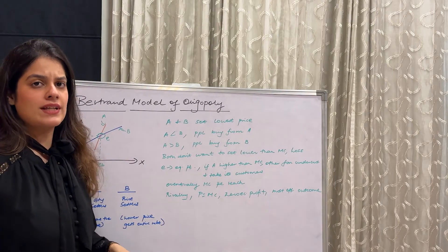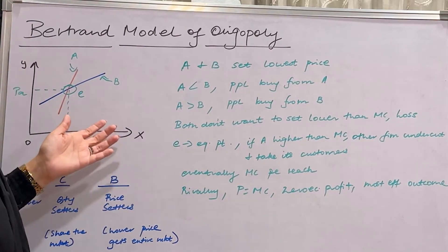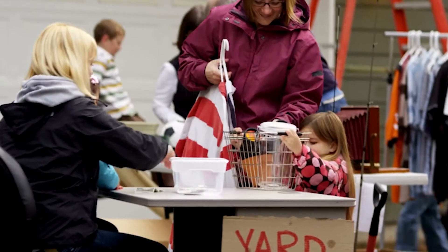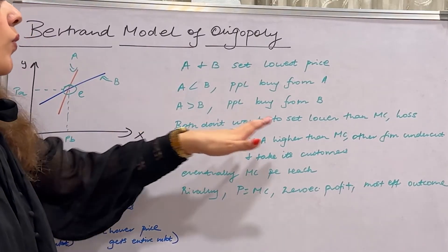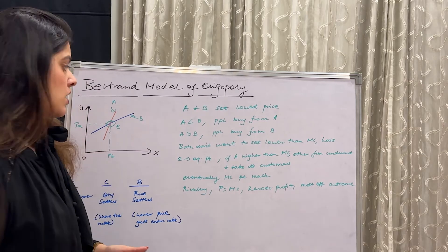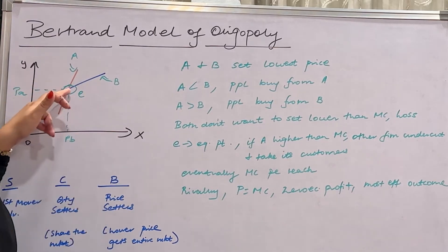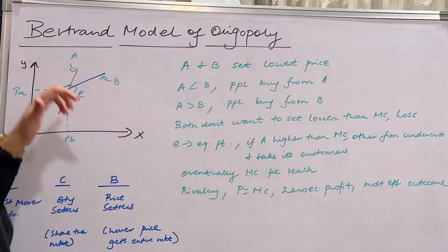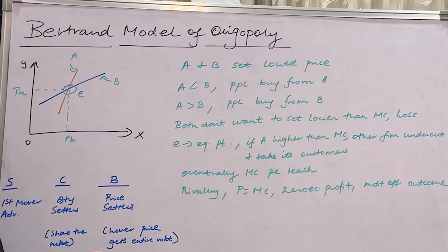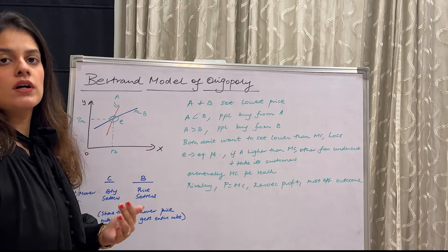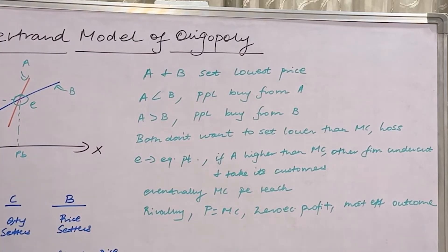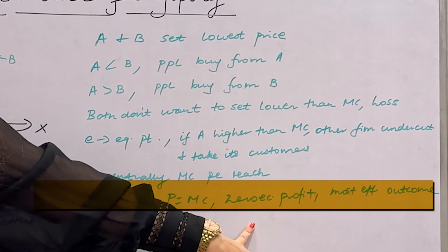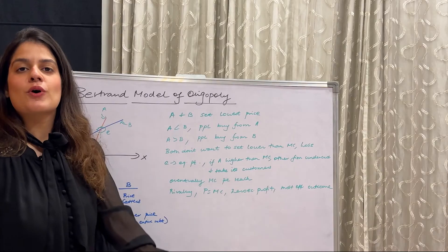Looking at the diagram: firms A and B are the two producers, shown with reaction curves in blue and red. Both firms set the lowest price they can. If A's price is lower, consumers buy from A; if B's price is lower, they buy from B. Neither wants to price below marginal cost, as that leads to a loss. The best outcome is the intersection point E — the equilibrium — where both firms' prices equal marginal cost. If A sets a price higher than MC, B will undercut and take all of A's customers. Eventually, both firms reach price equals marginal cost.